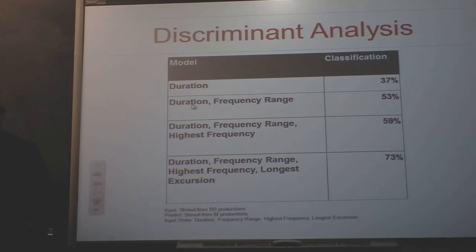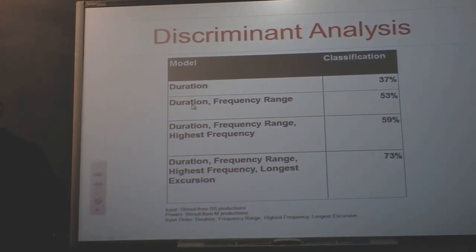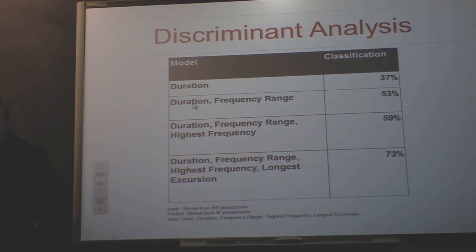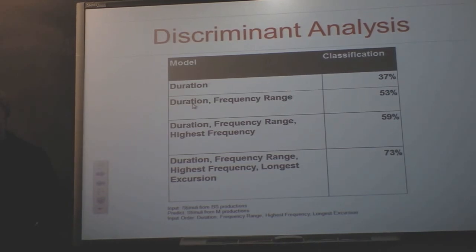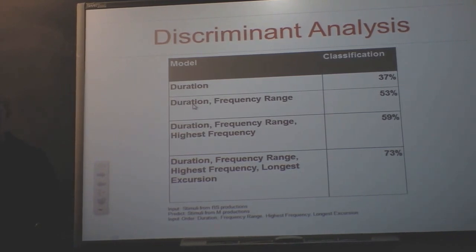As we add more variables, the percentage that is the same between the two different musicians increases. 73 percent is actually very accurate because lie detectors use a similar method, and they have less than 50 percent accuracy — so you'd be more accurate flipping a coin to guess if someone's lying than using some of those lie detectors. So 73 percent is pretty good.